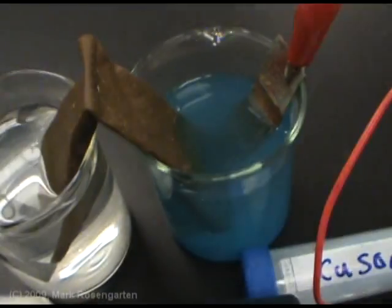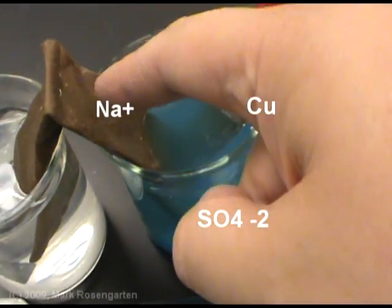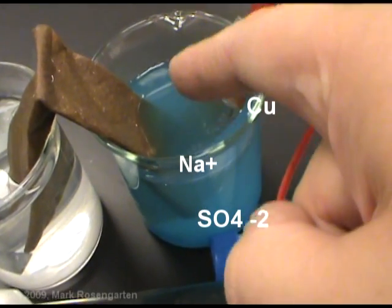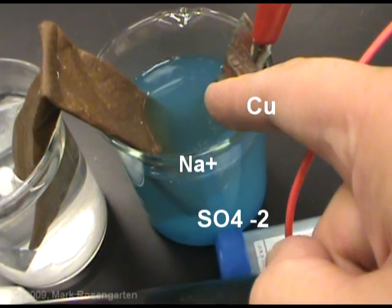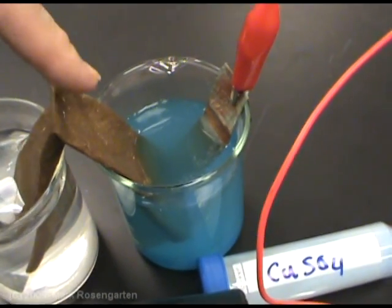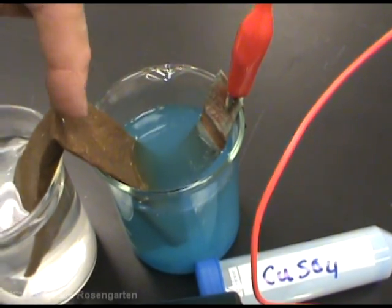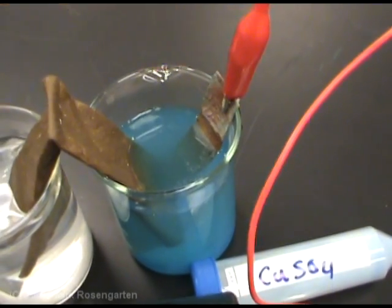So, the sodium ions from the salt bridge will come off the salt bridge into the solution to make up for the lost plus 2 copper ions. Of course, each sodium is only plus 1. So, for every copper plus 2 that comes out, two sodiums have to go in to take their place.